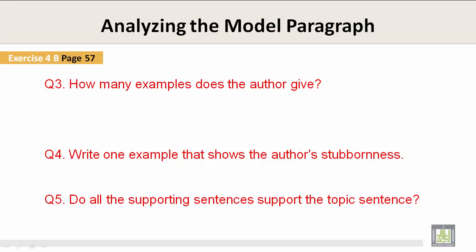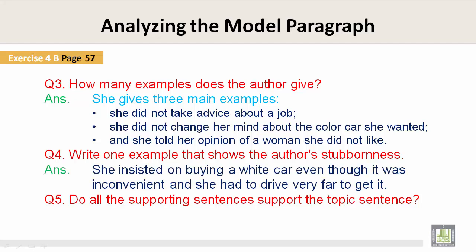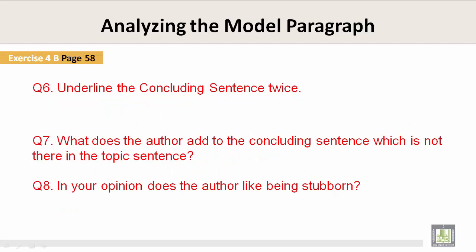Exercise 4B, page 57, question three: How many examples does the author give? She gives three main examples — she did not take advice about a job, she did not change her mind about the color she wanted, and she told her opinion of a woman she did not like. Write one example that shows the author's stubbornness: She insisted on buying a white car even though it was inconvenient and she had to drive very far to get it. Do all the supporting sentences support the topic sentence? Yes.